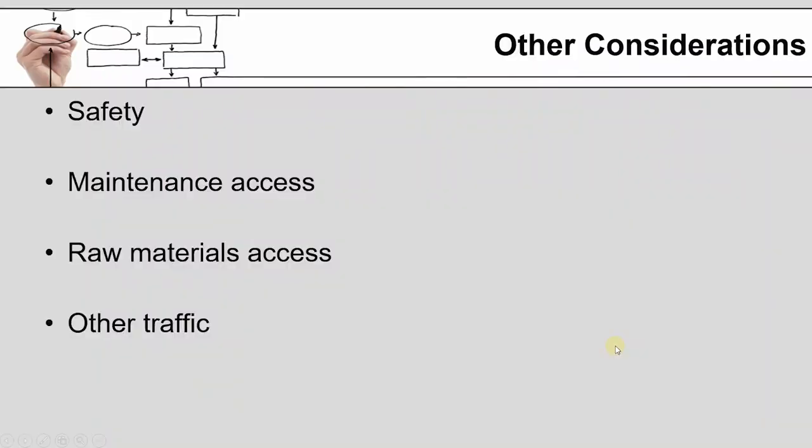Finally, some other considerations you're going to want to make for your facility layout is something like safety. There's a whole module for safety and there's a bunch of videos I want you to watch related to that. You need to think about where are there going to be gates, where are there going to be fences or other barriers to keep employees from getting into an area where they can get hurt.